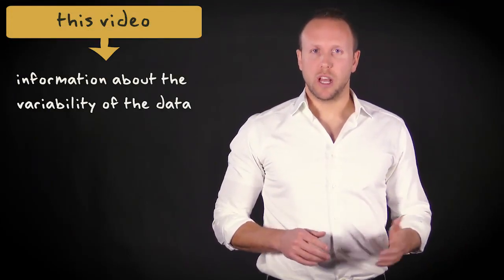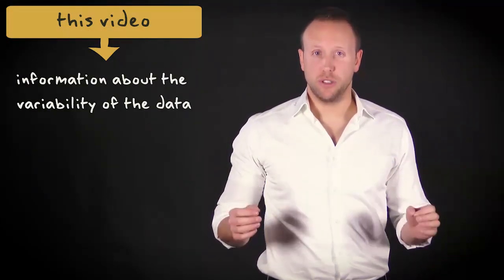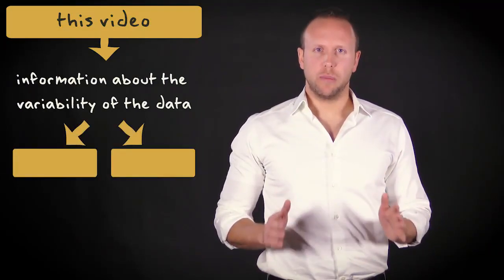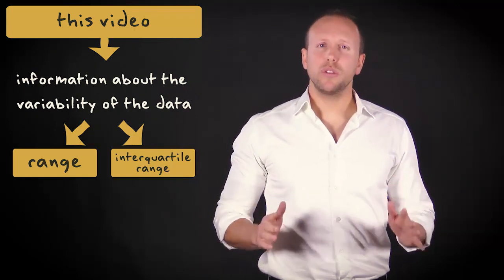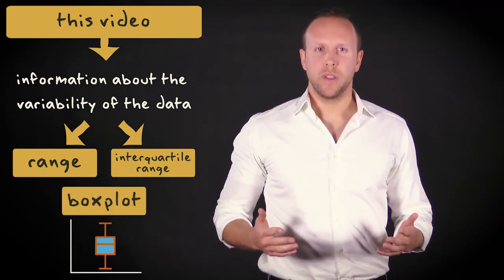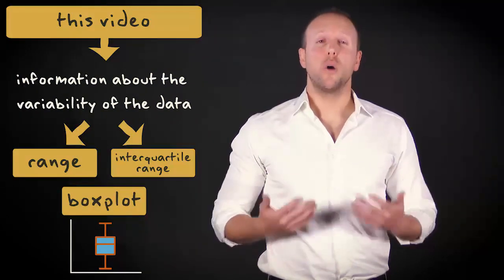In this video, I will show you that we also need to have information about the variability, or dispersion, of the data. I will discuss two measures of variability, the range and the interquartile range. I will also discuss the so-called box plot. It's a very useful graph that gives a good indication of how the values in the distribution are spread out.